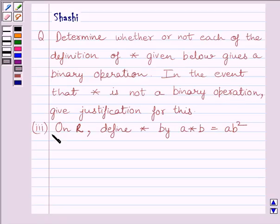Third part is, on R, where R is the set of all real numbers, define star by A star B is equal to AB square.